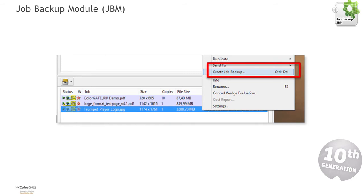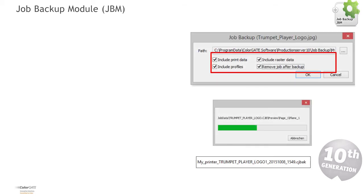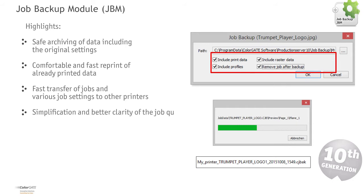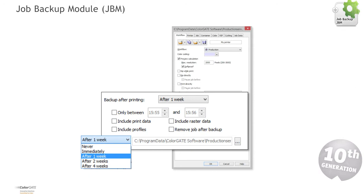The Job Backup Module enables archiving of single print jobs — if desired including all job-specific settings, for example profiles and print data — to a freely definable directory. At a later time, these jobs can be reproduced on the same or another printer using the original settings. The Job Backup Module offers the following advantages: more safety due to archiving of data including the original settings; comfortable and fast reprint of already printed data; automated archiving; fast transfer of jobs and various job settings to other printers; simplification and better clarity of the job queue; and less assignment of memory space, therefore increasing system performance. Jobs from the job queue can be saved manually or automatically. When archiving automatically, it must be defined if and when all jobs of a specific hot folder are saved after printing.